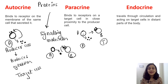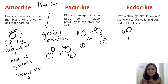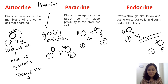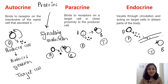Next is endocrine action. Here cytokines travel through the circulation and act on target cells in distant parts of the body. Cell A is the producer cell and it releases cytokines, which move through the blood to a distal site where cell B is located. The cytokines attach to the cell surface receptor of cell B and act on it. The difference between paracrine and endocrine is that in paracrine, the producer and target cells are in close proximity, whereas in endocrine, the producer and target cells are residing far away from each other.